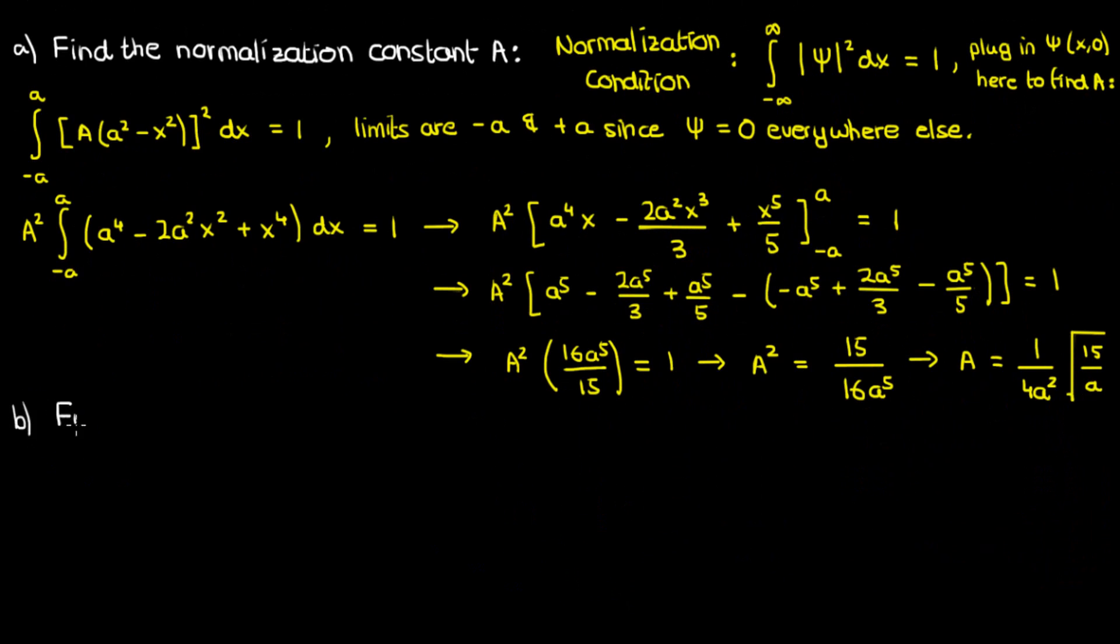Let's go to part B where we find the expectation value of x. From a previous video, we talked about how to find the expectation value of a physical quantity Q for a wave function ψ. The expectation value of Q, which is generally a function of position x and momentum p, is found using this equation. The expectation value of x is given by the integral from -∞ to ∞ of ψ* times x̂ψ dx.